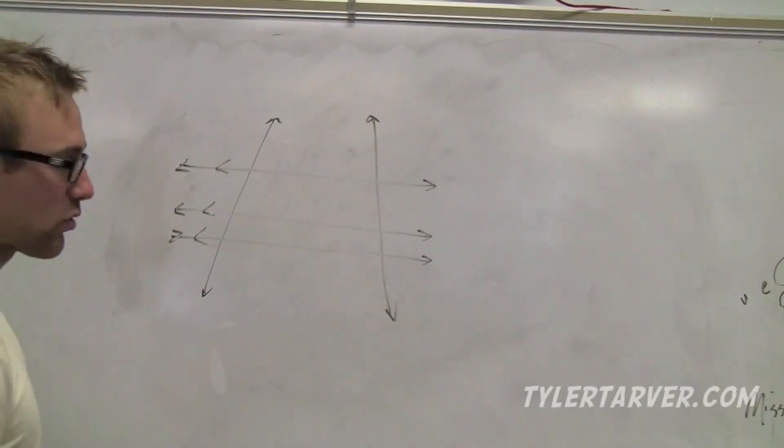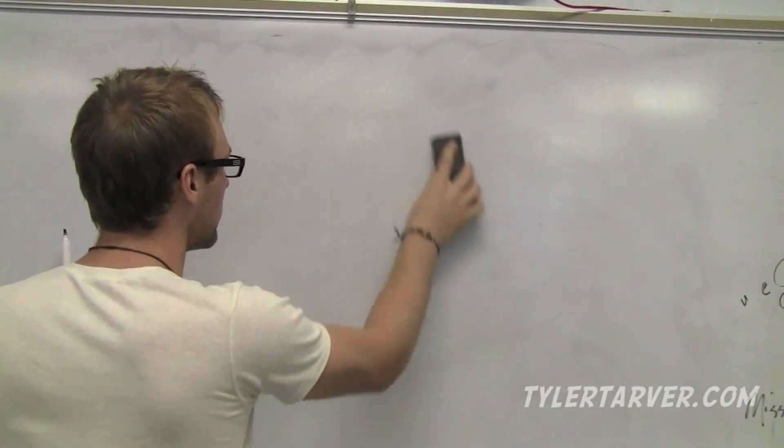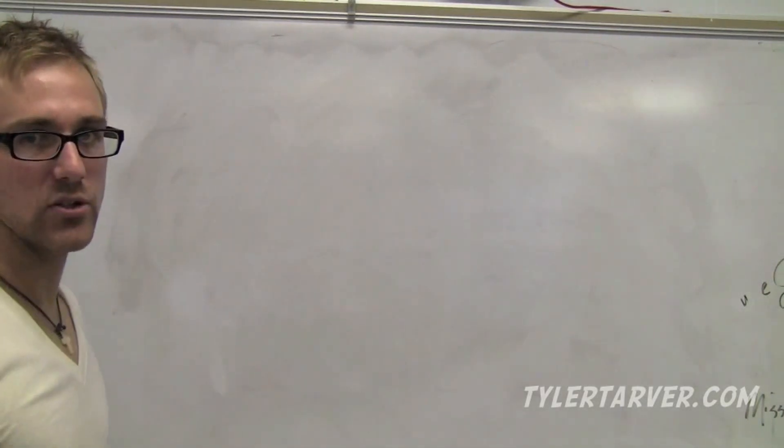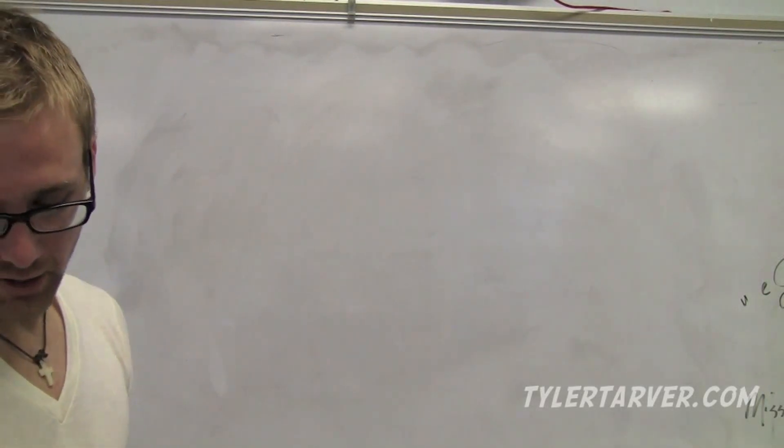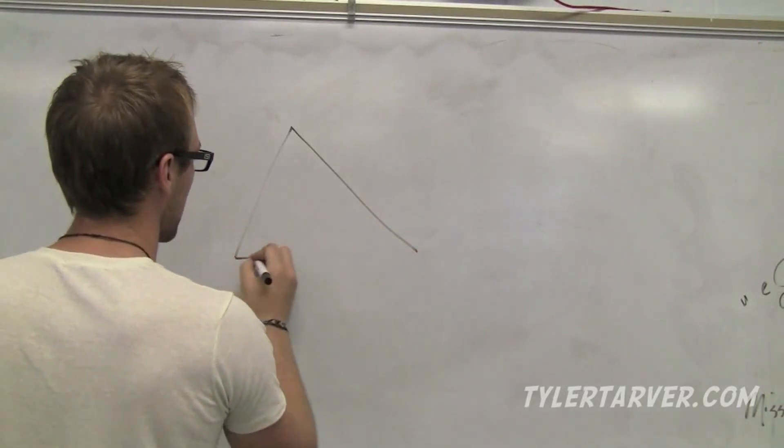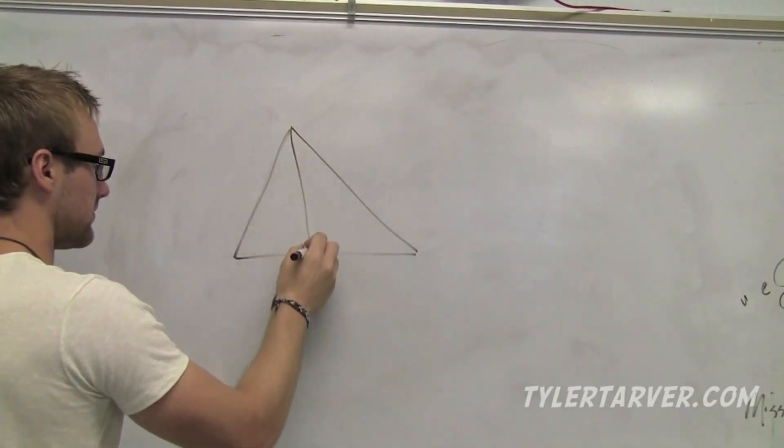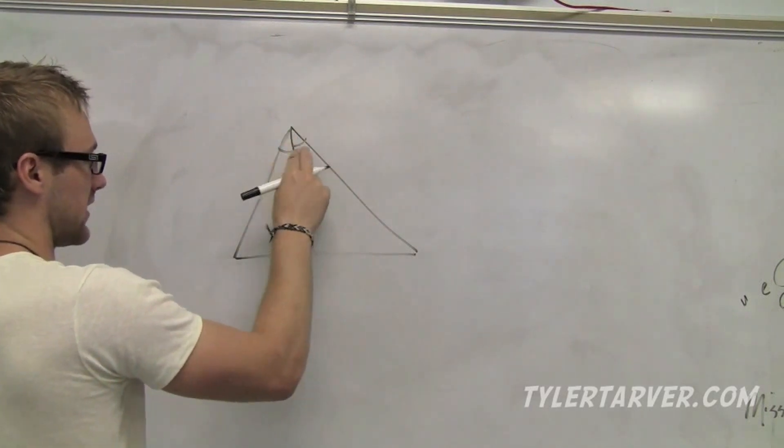Next thing is the triangle angle bisector theorem. Triangle angle bisector theorem. Essentially what this one says is, if you have a triangle, and this is the angle bisector, it cuts that angle in half, which that side is equal to that.